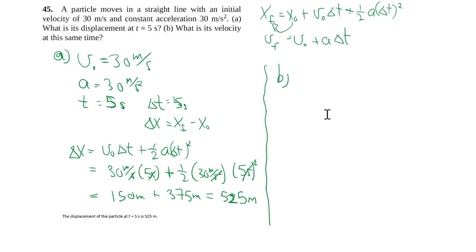Part B asks us for the velocity, which is our second kinematics formula. Since there's nothing really special going on here, I'm just going to sub in the numbers right away. Seconds, one of the seconds cancels out, we get meters per second.